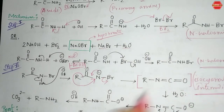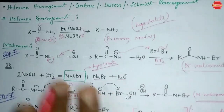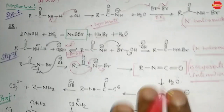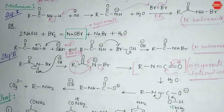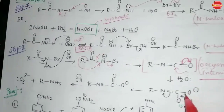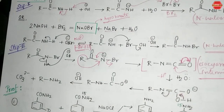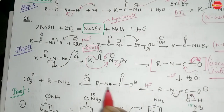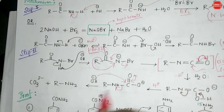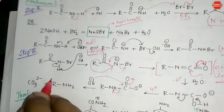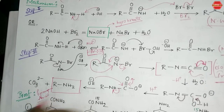The intermediate formed is called the isocyanate intermediate. This intermediate is extremely important because all four rearrangement reactions — Hofmann, Curtius, Lossen, and Schmidt — pass through this same isocyanate intermediate. After this, water attacks, bonds rearrange through the nitrogen side, and after protonation you obtain the primary amine, which is the primary target of this reaction.